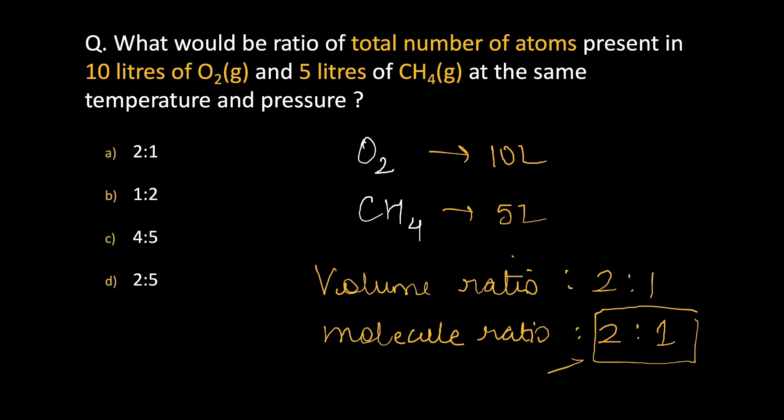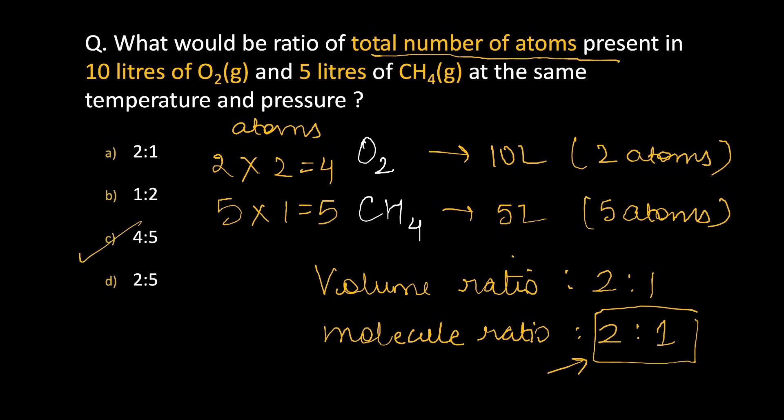Now remember, this is the molecular ratio and not atomic ratio. How many atoms are there in oxygen? 2 atoms. And how many atoms are there in methane? 4 and 1, 5 atoms. We had to find the total number of atoms present and the ratio of the total number of atoms present. So, we can say for oxygen, if I am talking about the atoms, then I have to multiply 2 into 2, that is 4 and for methane, I have to multiply 5 into 1, that is 5. So, 4 is to 5, that is option number C becomes the answer to this question.